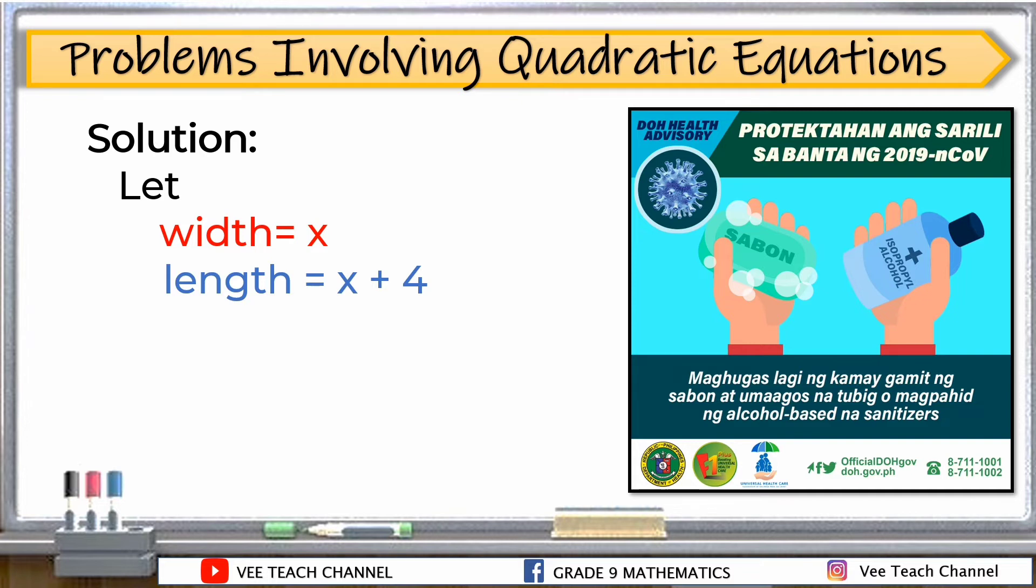I-write down natin yung mga nakuha natin given dun sa problem. So, width is equal to x. Tapos, length is equal to x plus 4. Natatandaan nyo, sabi sa problem, yung length ay mahaba ng 4 meters sa width. Kung ang width ay x, ang length natin ay magiging x plus 4. Then, of course, our area is 96 square meter. Given din siya dun sa problem. Ang formula ng rectangle is length times width is equal to area. I-substitute natin yung mga given dun sa ating formula. Ang length natin is x plus 4. Tapos, yung width is yung x. Tapos, yung area, 96.